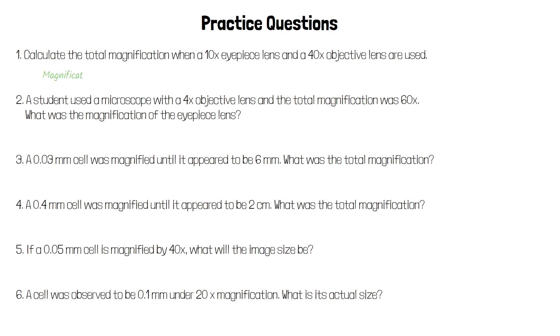For the first question we use the equation magnification equals eyepiece times objective. The eyepiece is 10 times magnification and the objective is 40 times. That gives us a total magnification of 400 times.